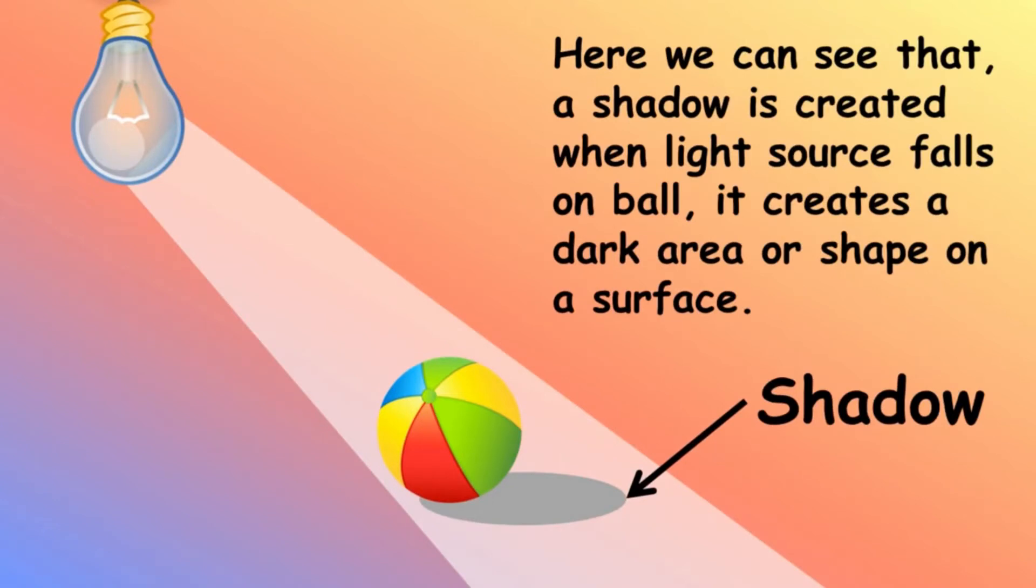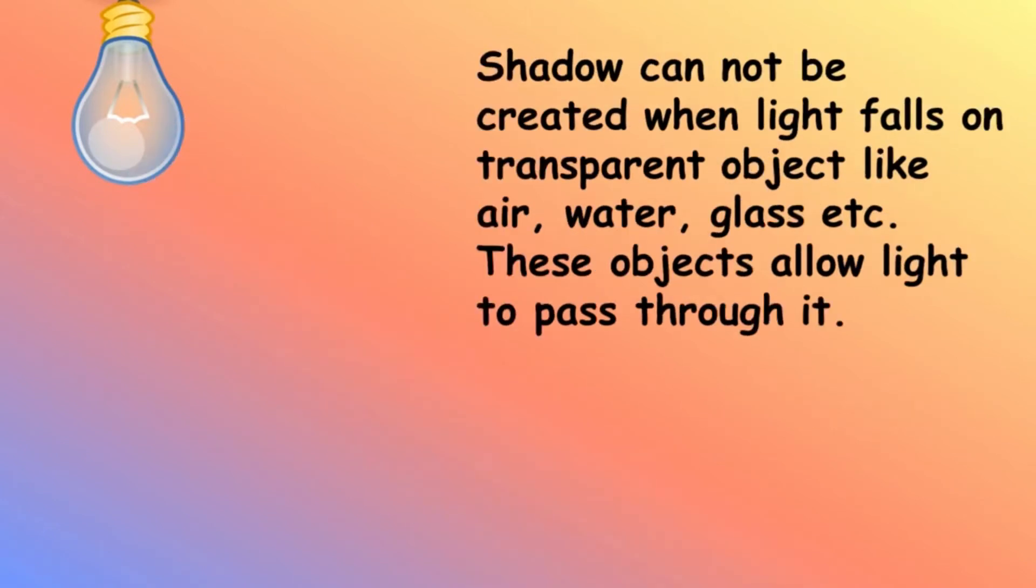Shadow cannot be created when light falls on transparent objects like air, water, glass, etc. These objects allow light to pass through them.